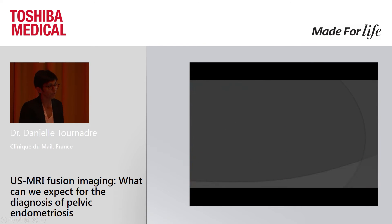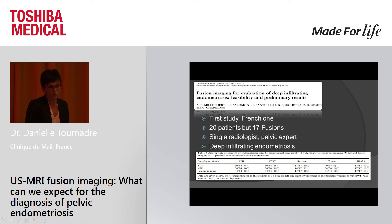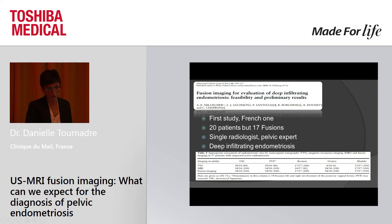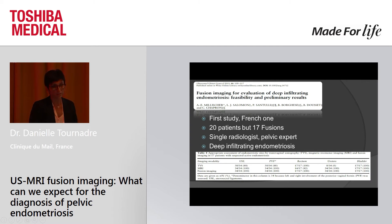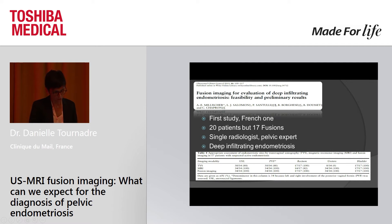The first French study on fusion imaging was published with 20 patients, but performed by a single radiologist — a pelvic expert — who performed both MRI and ultrasound. The study explored the main locations of deep endometriosis by transvaginal ultrasound, MRI, and fusion imaging. The results were excellent except for ureters. However, it was a single radiologist, not a gynecologist. There was no size information, excluded cases of uterine position problems, and no surgical assessment.